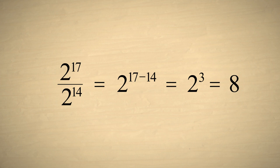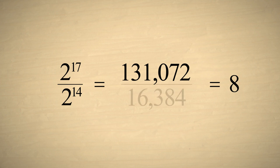Notice that subtracting exponents is a lot easier than multiplying seventeen twos in the numerator and fourteen twos in the denominator, and then dividing.